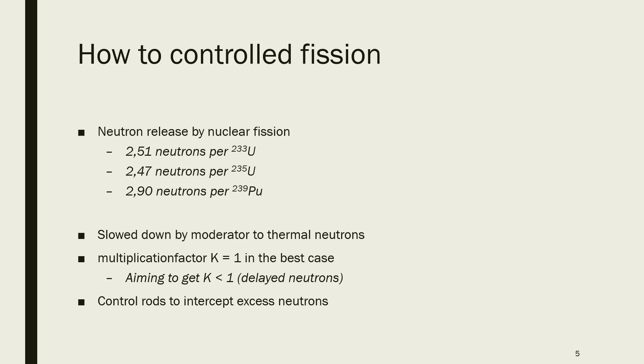In practice, you are trying to aim on a k value below 1 because you have delayed neutrons. So the fission products themselves can emit additional neutrons and you have to account for that. So you are trying to get a k value of below 1, and you have your control rods to intercept this excess of neutrons that will happen if you split the Uranium-235 or Plutonium-239 atom.